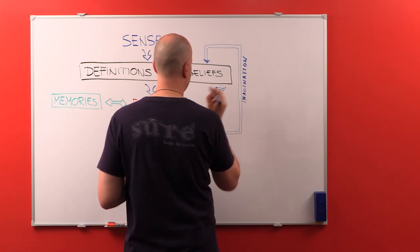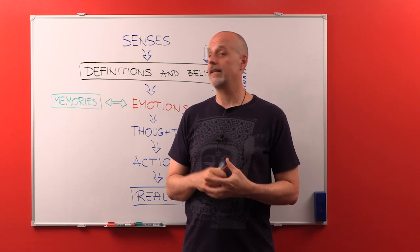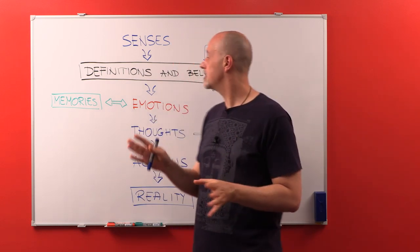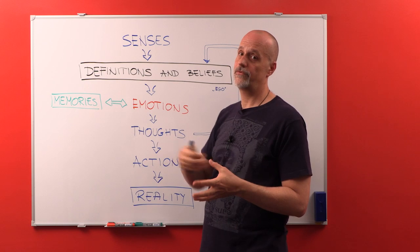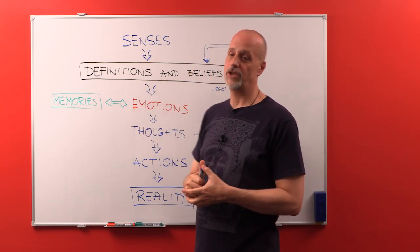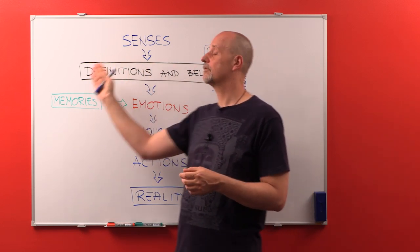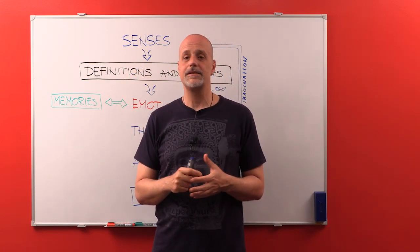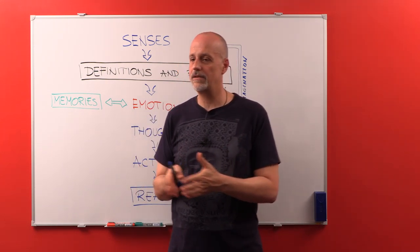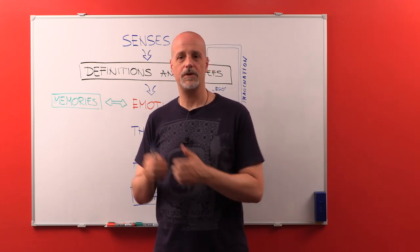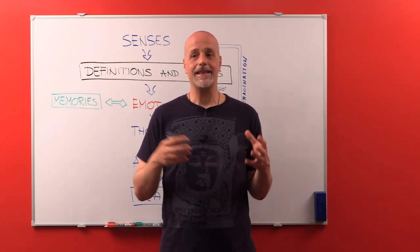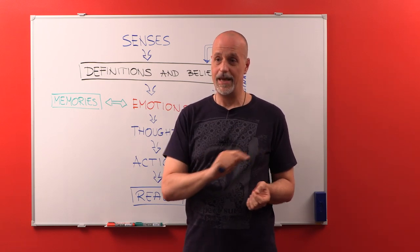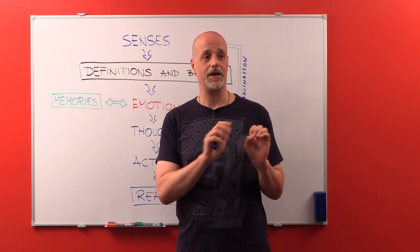So your EGO is your software, and like any other piece of software, it has an input and it has an output. In this case, input is your senses, information that you are picking up through your senses or through your imagination. And then this piece of software, based on some rules that are embedded in there, is creating a decision - is that good for you or bad for you, is that useful or not useful? And then it creates a vibration that your body will pick up and interpret as pleasant or unpleasant.